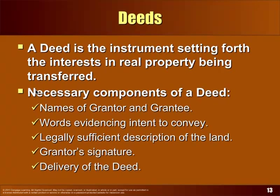A deed is a writing that evidences a conveyance from the grantor to the grantee with a legally sufficient description — not 'from this rock over to those trees' but in terms that would identify the land from any other land on the face of the earth. With the grantor's signature — you need their signature on it. And like other things we've talked about, you also need delivery. It's not enough to write it up, sign it, and throw it in a drawer — you actually have to deliver the deed to convey the property.